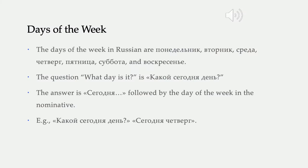Let's start with days of the week. The days of the week in Russian are: понедельник, Monday, which literally means the day after Sunday; вторник, Tuesday, which literally means the second day; среда, Wednesday, which literally means the middle; четверг, Thursday, which literally means the fourth day; пятница, Friday, which literally means the fifth day; суббота, Saturday, which is the Sabbath; and воскресенье, Sunday, which is resurrection day.